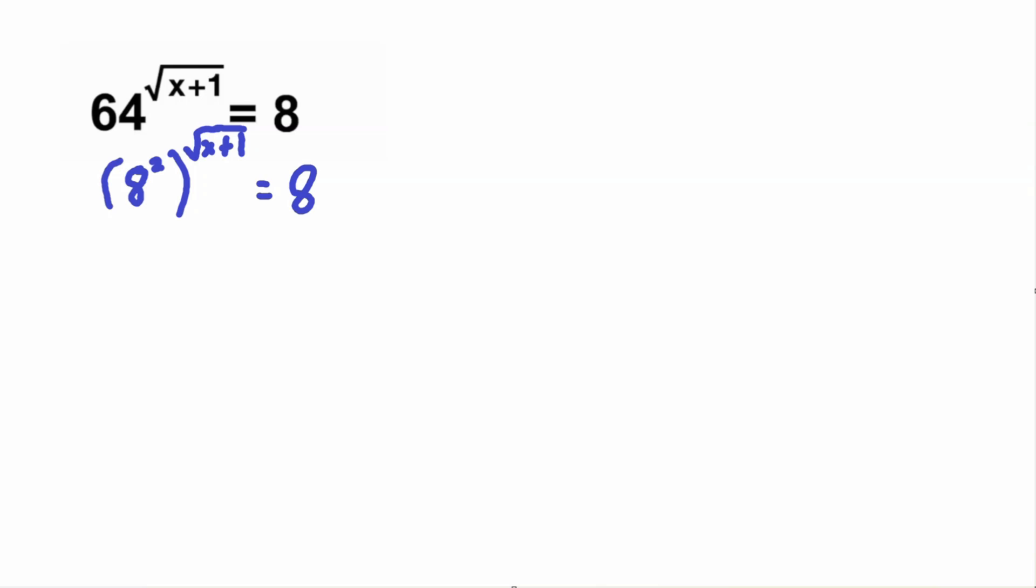So now there is a certain exponent rule that states if we have a to the power of b to the power of c, this is equal to a to the power of b times c. So if we have two exponents, it's the same thing as if these two exponents get multiplied by one another. So in this case we can consider our b to be our 2 and our c to be our square root of x plus 1.